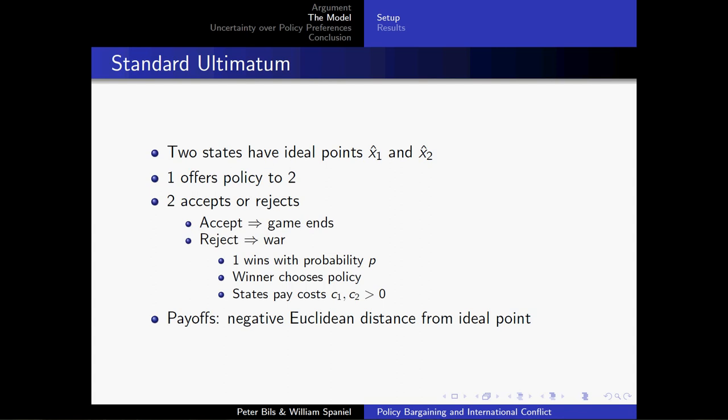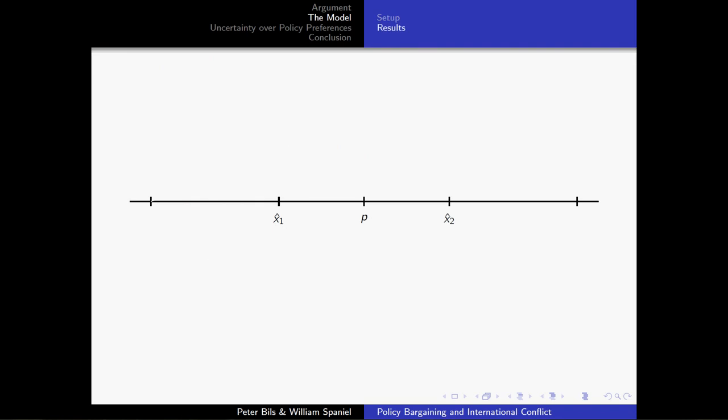Policy-wise, the state's payoffs are the negative Euclidean distance from the state's ideal point. This is the standard stuff that you would see in an American politics paper on ideal points. Essentially, the further you are away from your ideal point, the worse payoff you get. Fortunately, I can give you all of these results in nice pictures, rather than throwing up a bunch of words on the screen. So, picture-wise, what's going on here? We have two different ideal points. We have an ideal point for state 1 and an ideal point for state 2 on the real line. We can fix that probability of victory. We can pretend that it is a convex combination between those two ideal points, somewhere in between. And that P there represents the average policy that's going to be implemented if they fight a war.